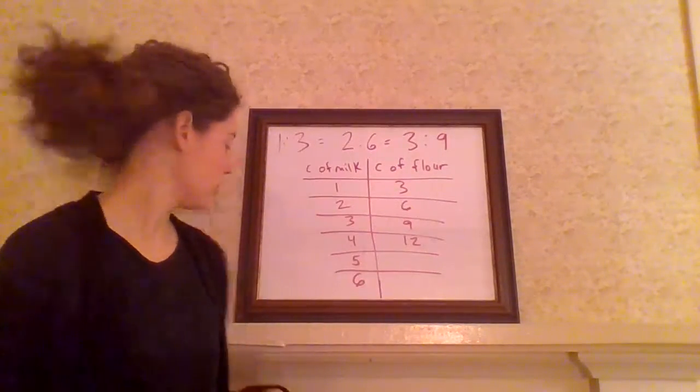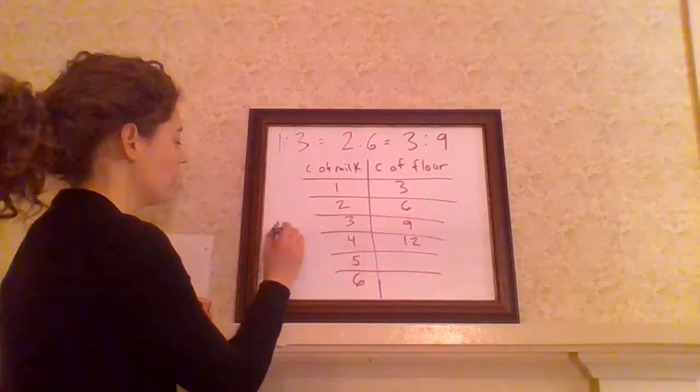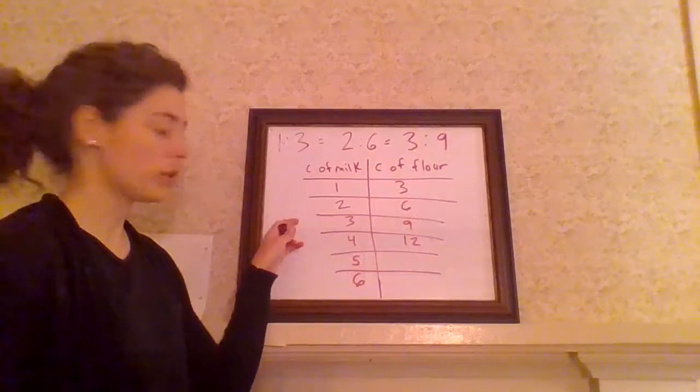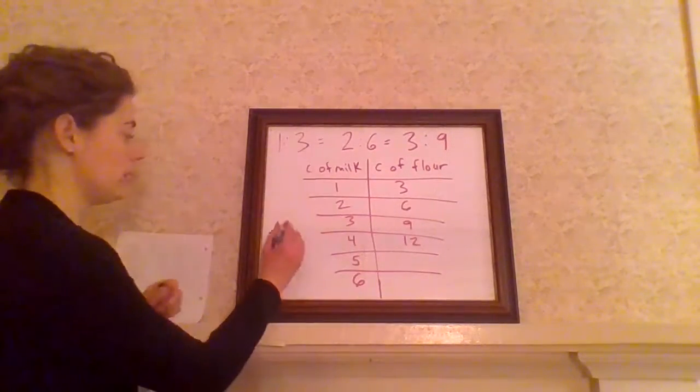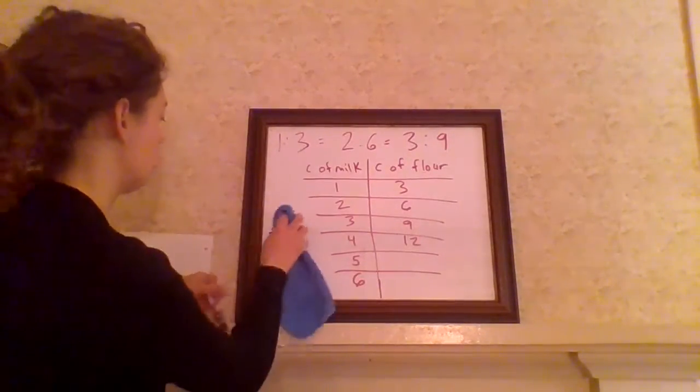So a fraction shows a part of something. So you might say, if there's four parts within the whole thing, we're talking about one of those parts. So one fourth. So this is the part, and that is the whole. So we're talking about part to whole.